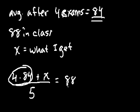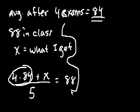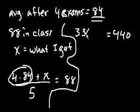And I said that I need to get an 88 in the class. And now we solve for x. So 5 times 88 is, let's see, 5 times 80 is 400, so that's 440. 440 equals 4 times 84, we just saw that, is 320 plus 16, that's 336. 336 plus x is equal to 440.